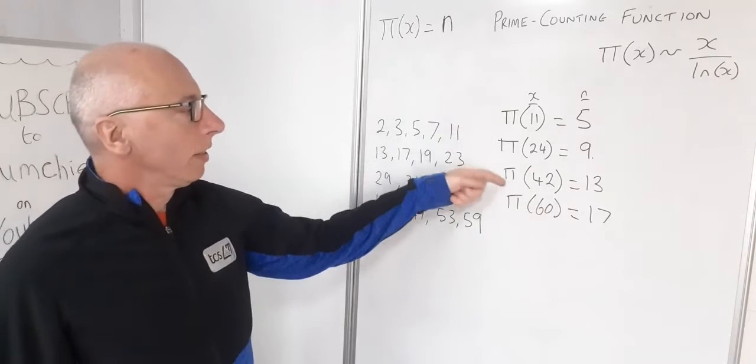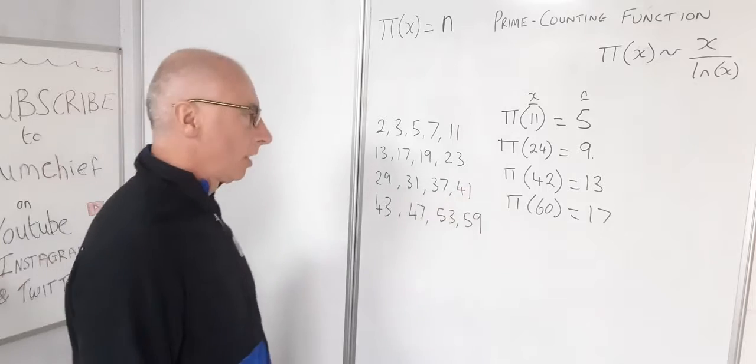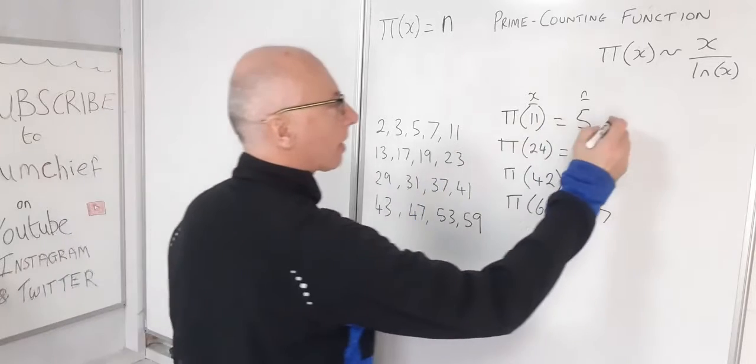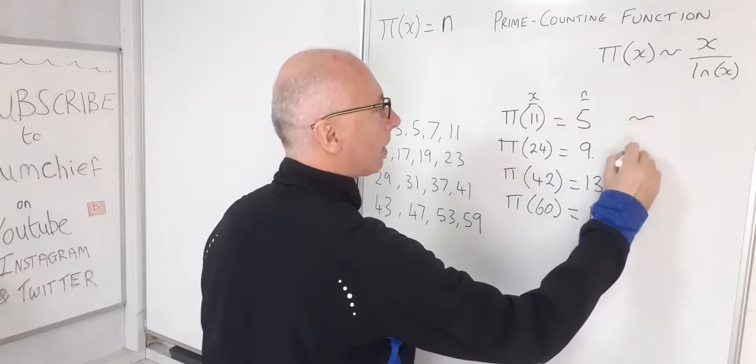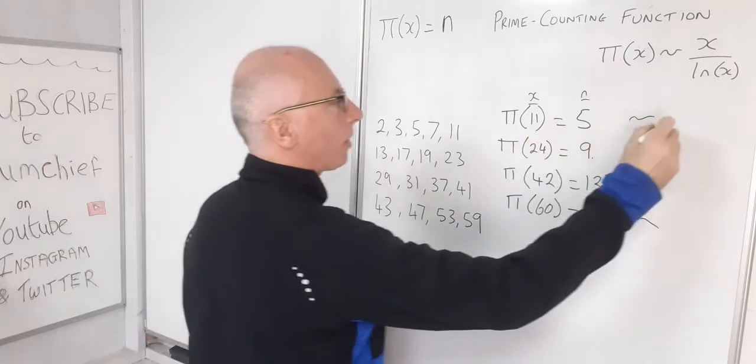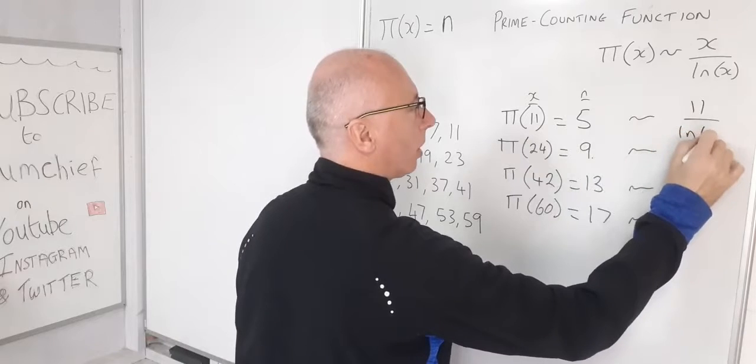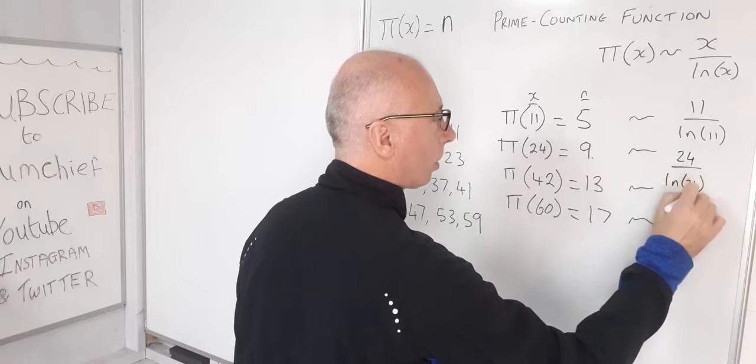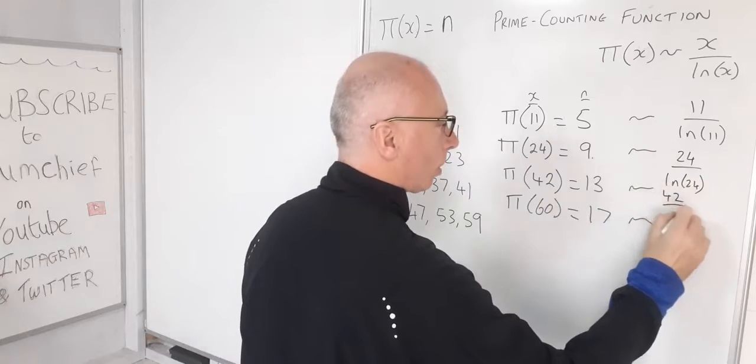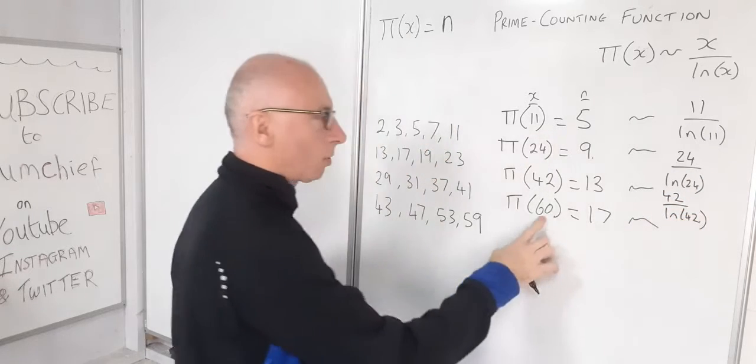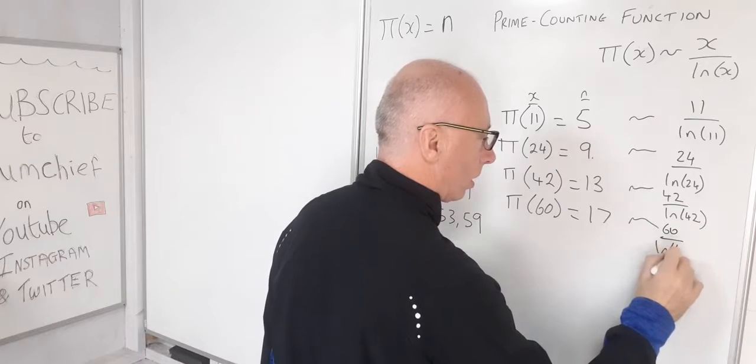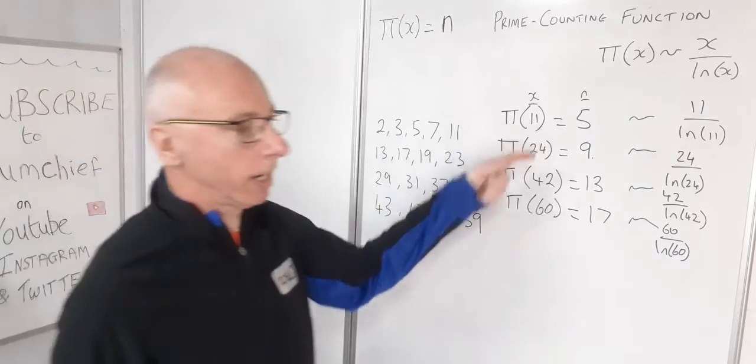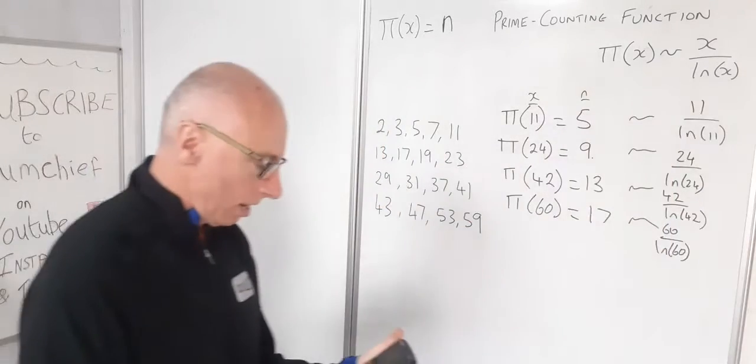Let's run that by on these ones and see what we get. If we plug in 11, we're going to get π(x) is approximately 11 over the natural log of 11. This one we'll plug in 24 over the log of 24, same for this one 42 over the log of 42, and this one we'll put in 60. These will give us approximate values. Let's just type that into the calculator and see what we get.